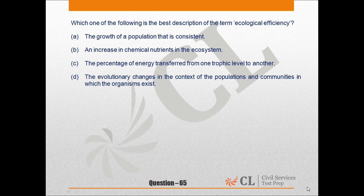CSP 2016 Mock 2 Paper 1 Question No. 65: Which one of the following is the best description of the term Ecological Efficiency? a. The growth of a population that is consistent. b. An increase in chemical nutrients in the ecosystem. c. The percentage of energy transferred from one trophic level to another. d. The evolutionary changes in the context of populations and communities in which the organisms exist.